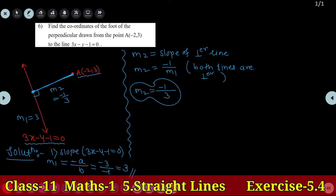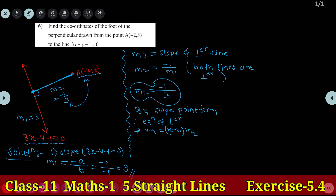Now we find the equation of the perpendicular line using the slope-point form. The equation is Y minus Y1 equal to M2 times (X minus X1), where M2 is the slope of the perpendicular line. Here X1 equal to minus 2, Y1 equal to 3, and M2 equal to minus 1 upon 3.